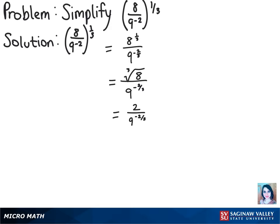But we know that since the 2/3 power is negative, we should bring it up to the numerator so it'll be positive. So then we get 2 times 9 to the 2/3 power.